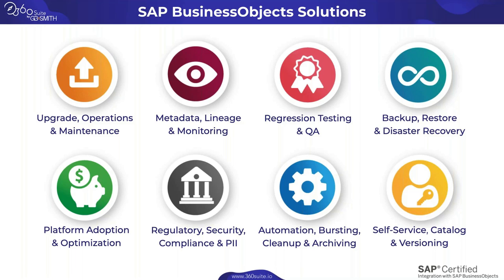Question from Singram: We have 4.2 SP4 in prod with 25 named user licenses. If I install 4.3 on test and request new license keys, will I lose existing licenses for 4.2 SP4? Answer: No. If you acquired Business Objects post-2008, SAP does not charge for test and development environments. You can run simultaneously in both versions during an upgrade. To get 4.3 keys, as long as you're current on maintenance, download them from the SAP Software Download Center using your S-user ID.